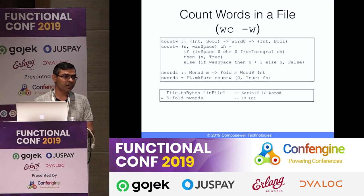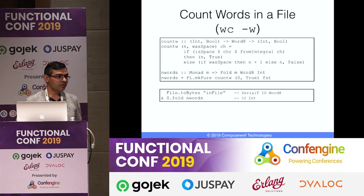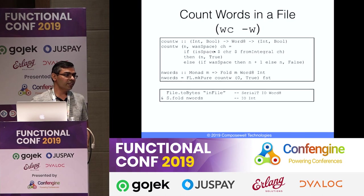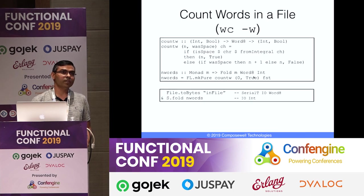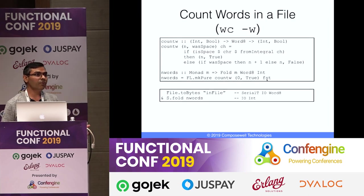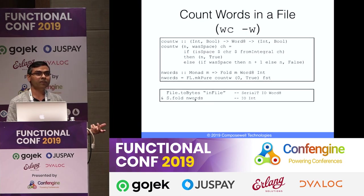For WC -w (word count), the state holds the word count and whether the previous character was a space. We start with 0 words and space=true, so as soon as you encounter a non-space you increment the count. We use FST to extract the final count from the tuple. Then we fold the byte stream using the nWords fold to get the word count.